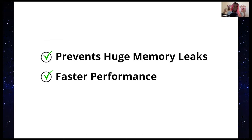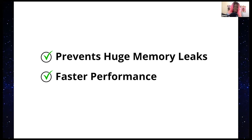Swift is also a really safe language. It's very memory-centered — memory safety is something that really defines Swift as a language. It prevents huge memory leaks, which contributes to the fact that it performs so fast. The compiler is really, really powerful, and that's because of how memory-driven and hyper-aware Swift is about memory allocation and preventing those memory leaks.